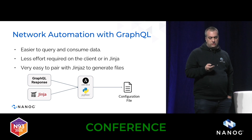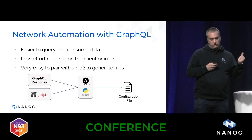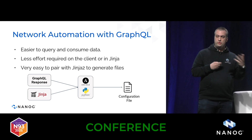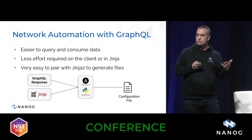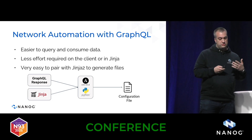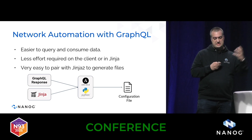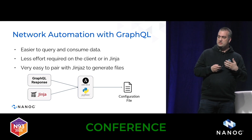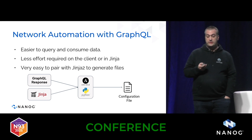On network automation: this is where GraphQL is very powerful. Previously, to generate a configuration for one device you might make 20 REST API calls to gather all the data, and Ansible inventory tends to be really slow. With GraphQL we've been able to simplify that dramatically — now we have one query to get all the data, feed it into a Jinja template, and it's much more readable. It really simplifies how we generate configuration.